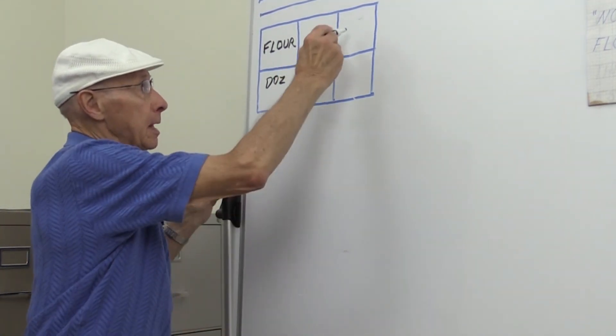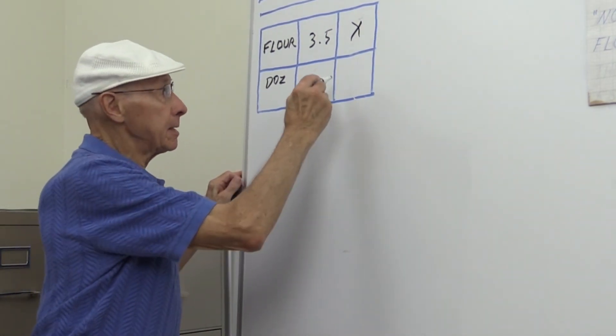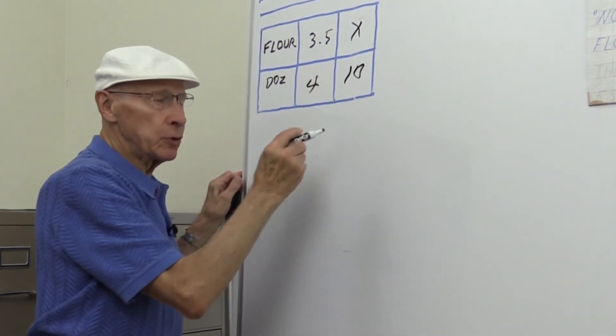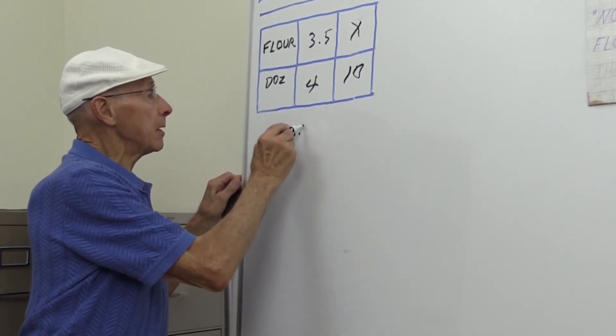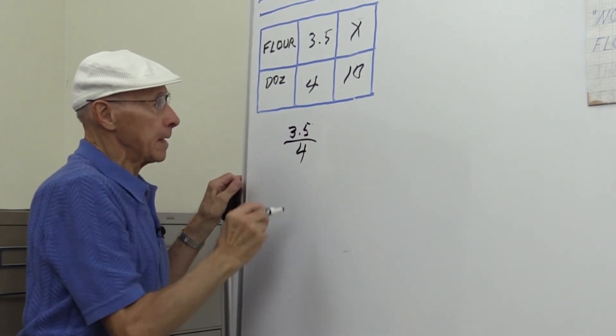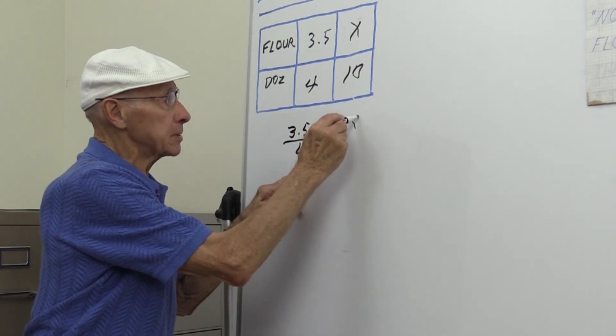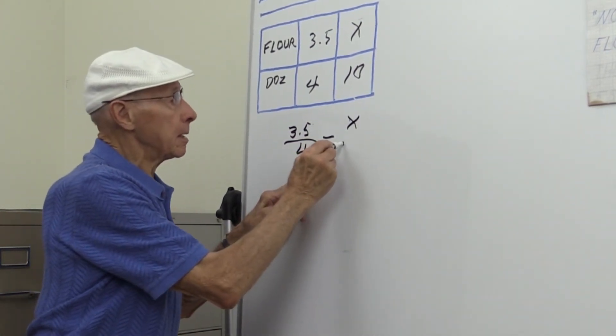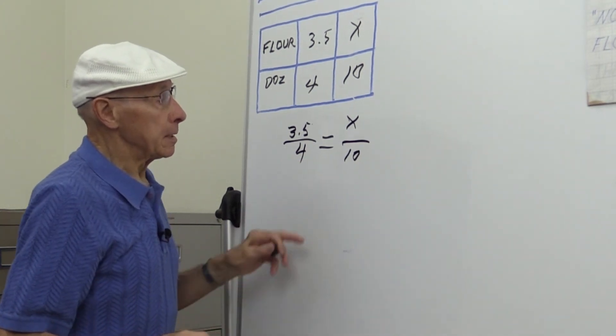So we have two ratios here. The first ratio is 3.5 to 4, and then that's equal to the x that we don't know times 10 over 10, the number of sugar cookies.